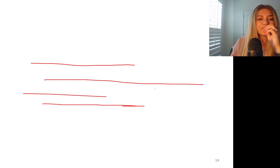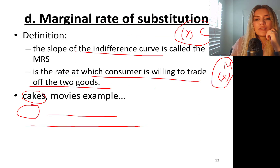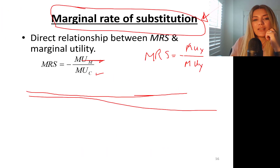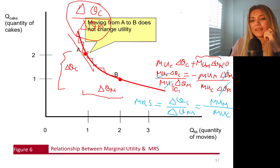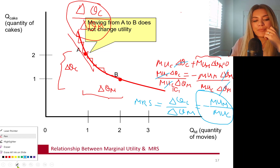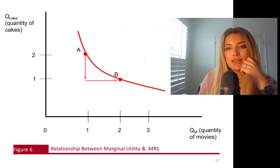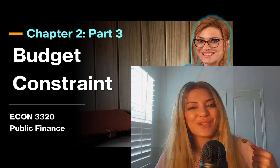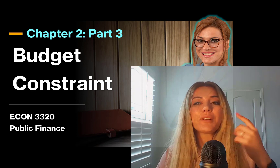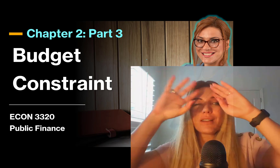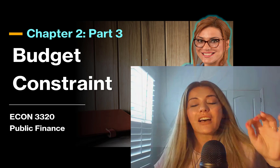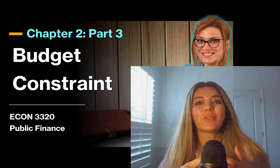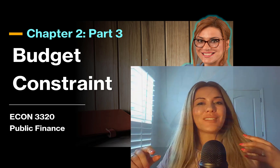So we've confirmed: marginal rate of substitution equals negative marginal utility of movies divided by marginal utility of cakes, and that's exactly what we derived. You don't need to memorize this derivation, but you need to know where it comes from. I will see you in Part 3, where we study budget constraints. Don't forget to subscribe if you haven't, and hit the like button — it helps the YouTube algorithm push this video to other students trying to earn A's in their courses. See you in the next video!